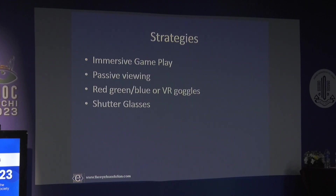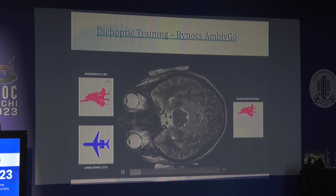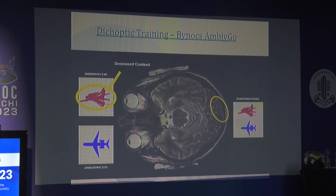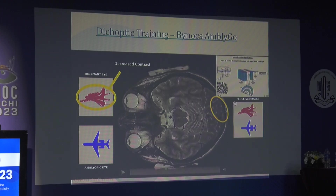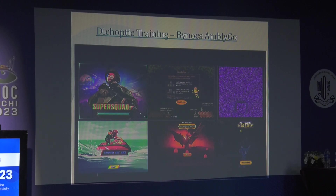Binocs uses a red-blue stimulus with red-blue anaglyph glasses. There is no option to directly reduce contrast — the dominant eye receives a slightly lower-contrast red, but the system requires matching the two together. Integration occurs in the occipital cortex and is said to improve stereopsis and vision in the amblyopic eye. They have various game strategies — Super Squad, Super Coin Catch — to keep the child engaged. Calibration is done on a computer monitor, not a mobile phone, and patients can be guided online on how to calibrate.